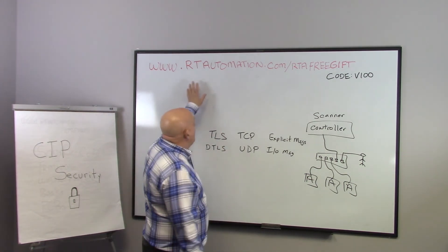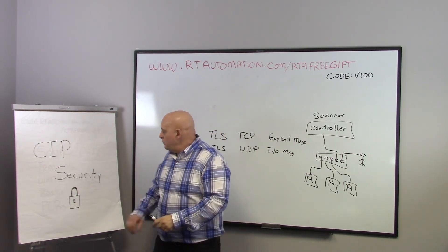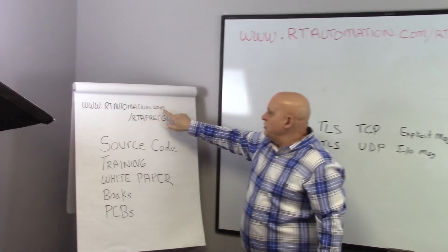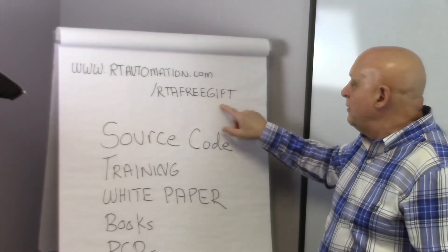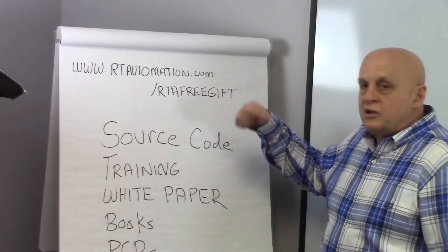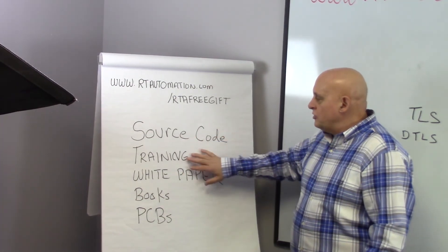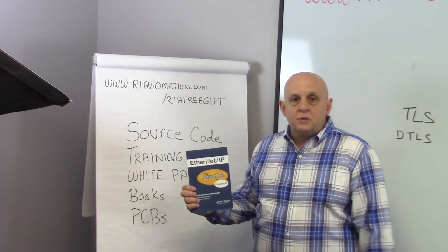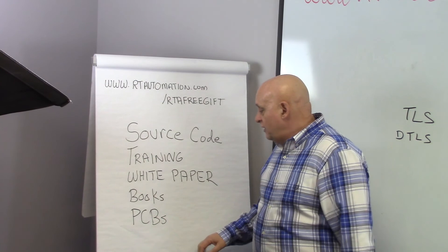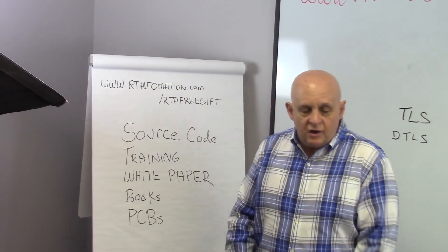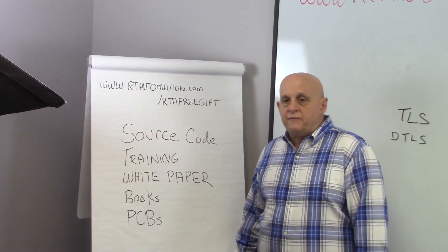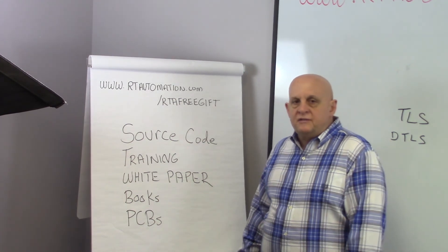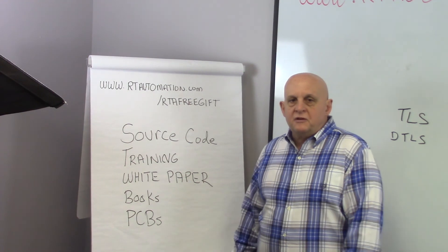RTA is here to help you. We've got a URL — rtaautomation.com/RTAfreegift — where you can get a free gift for staying to the end of the video: a book, information about our training, source code, and a white paper on SIP Security. We also have an EtherNet/IP book that will include SIP Security in the next few months, and modules and PCBs you can put inside your device to help with SIP Security. This was just an overview — the next videos will go into more detail. Thank you very much for listening, and I look forward to seeing you on the next video.